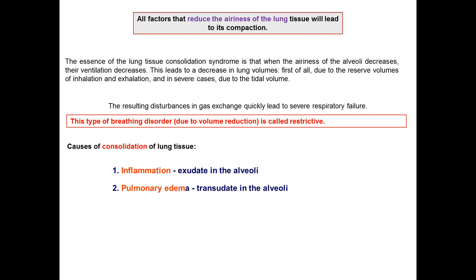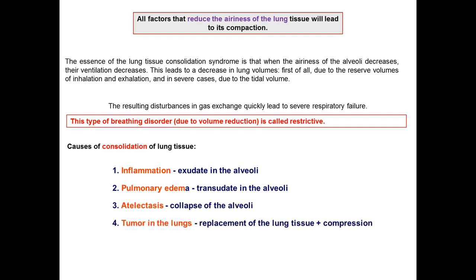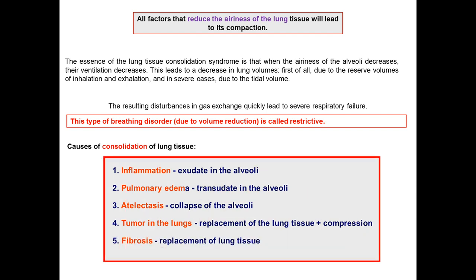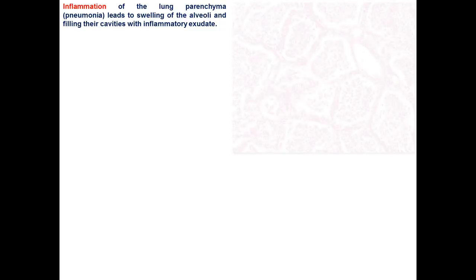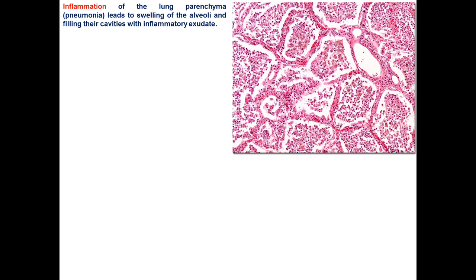There are several causes of consolidation of lung tissue. You should remember: first, inflammation with exudate filling the alveoli; second, pulmonary edema with transudate in the alveoli; third, atelectasis — collapse of alveoli; fourth, tumor of the lungs; and fifth, fibrosis. All these causes result in consolidation because alveoli lose their airness.